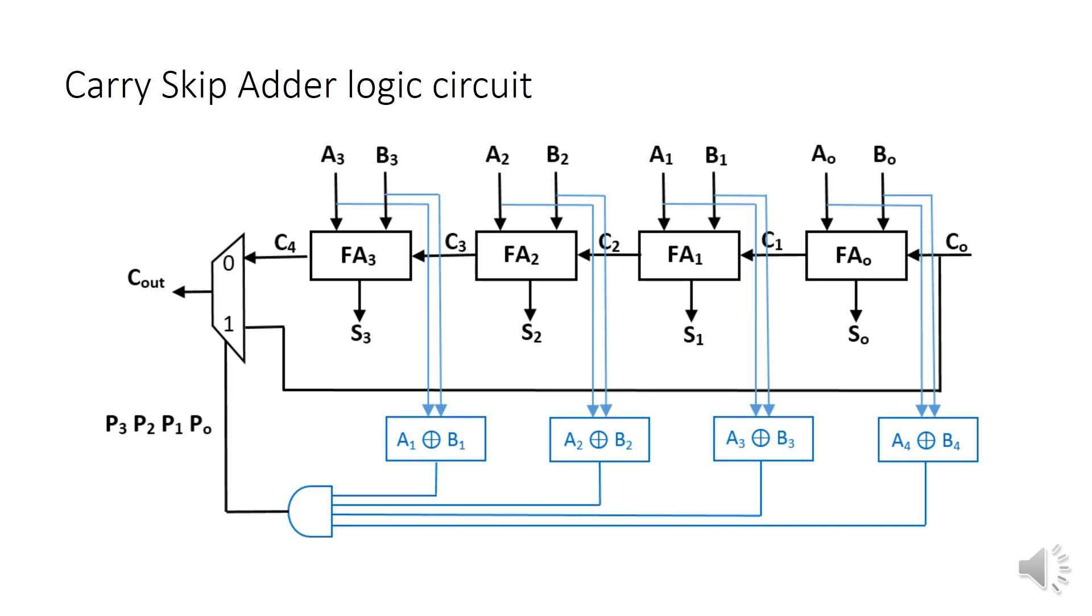In blue, I have completed the circuit diagram to verify this condition. These blue lines are the propagate signals. Note that in each line there is one exclusive or gate. If all the propagate signals are 1, then the product is 1 and the multiplexer opens the skip line.